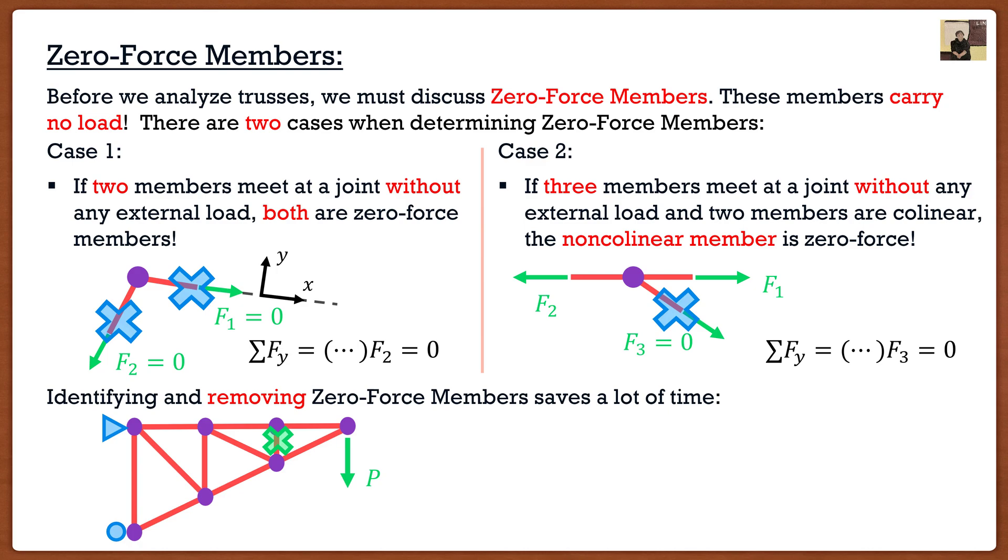You guys are saying Clayton, we just went through all the joints and we just took out one member, how does that help anything? Well here's the trick to zero-force members: you have to do more than one pass. You can't just go through it once, identify what you can, and say that's it, that's all. Because if we were to look at these joints, now that we took away a member, things start to change.